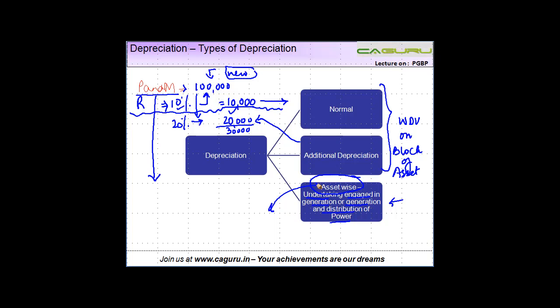In both these cases, depreciation is allowed on the written down value method. This is the third category of normal which in any case you get.